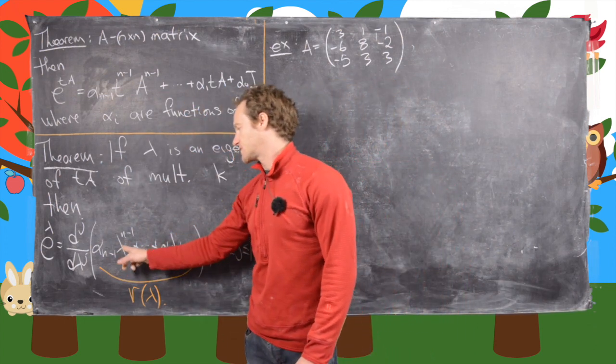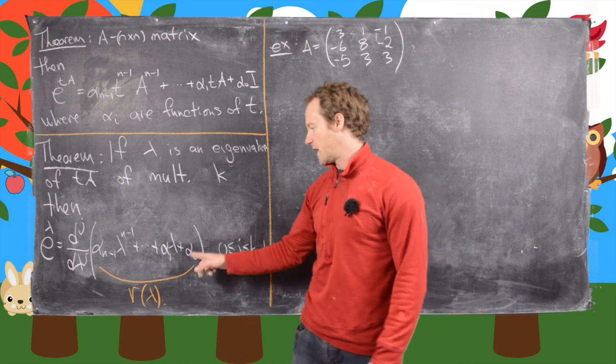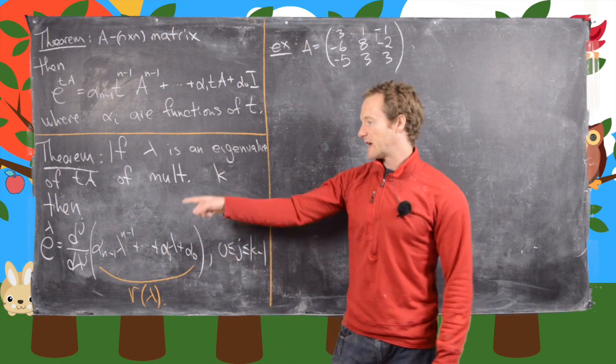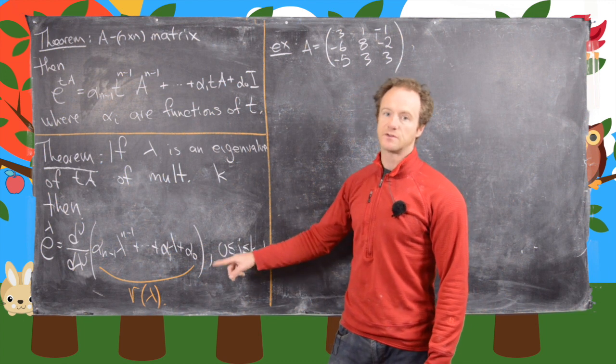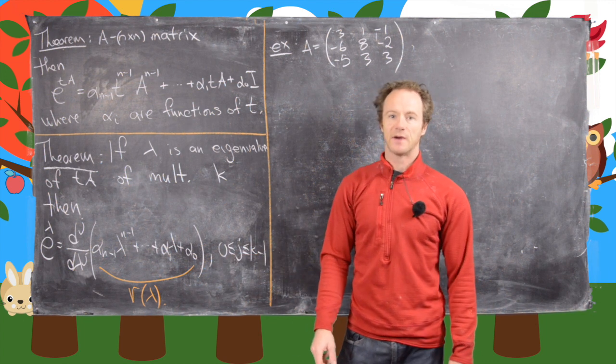And so alpha_{n-1}*lambda^{n-1} all the way down to alpha_0, and so that's equal to e to the lambda. And that's true for all derivatives j from zero—so the original polynomial—up to k minus one.